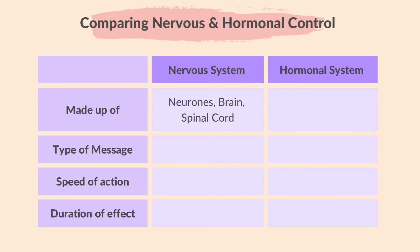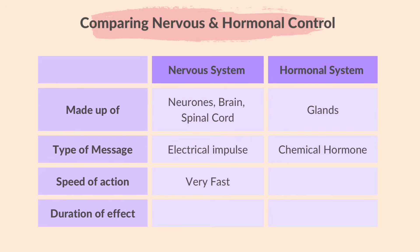Finally, let's compare nervous and hormonal control. The nervous system is made up of neurons, the brain, and the spinal cord, whereas the hormonal system is made up of glands. In the nervous system, messages are transmitted as electrical impulses; the hormonal system uses chemical hormones. The speed of transmission in the nervous system is very fast, whereas in the hormonal system it is very slow. The duration of response in the nervous system is short term, while in the hormonal system the response is usually longer lasting.